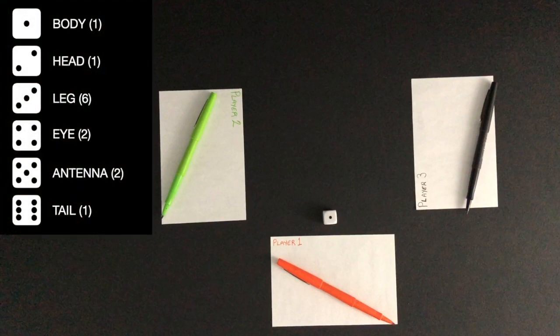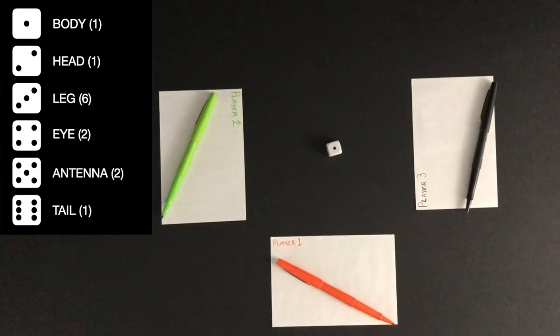Player 1 is first to play. The body has to be drawn first as every other body part is attached to the body. This means a player has to roll a 1 to start drawing. Player 1 rolls a 1 and is able to draw the body.